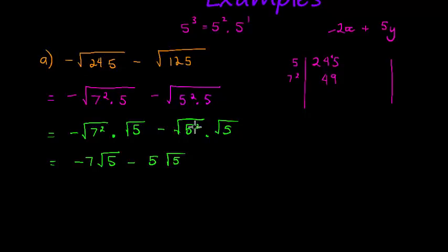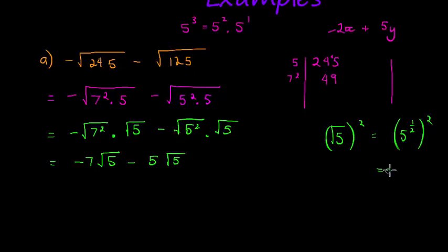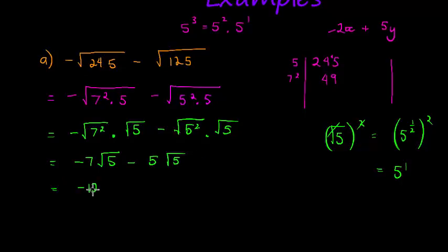Why does the square root of something squared simplify? The square root of 5 squared is the same as 5 to the power of 2, then to the power of a half — we multiply the exponents and get 5 to the power of 1. So it looks like the square and the square root cancel one another. Now I've got negative 7√5 and negative 5√5, so in total I have negative 12√5, and that is my simplified expression.